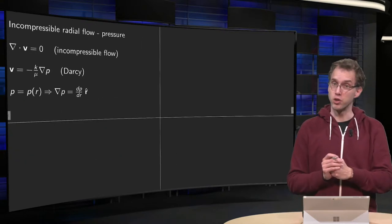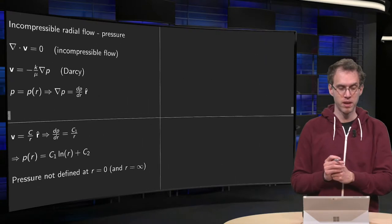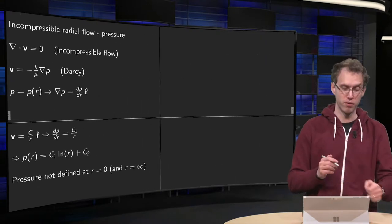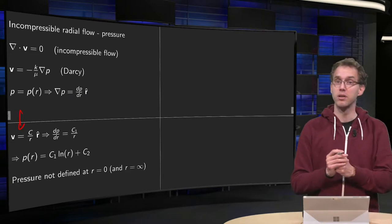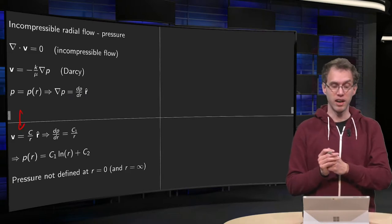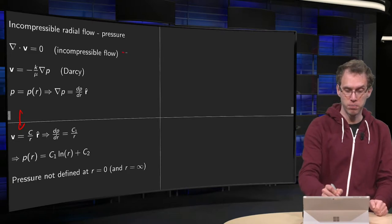Now then we can solve for pressure, because we also know from a previous video that v is a constant over r in the r-hat direction due to the incompressible flow.